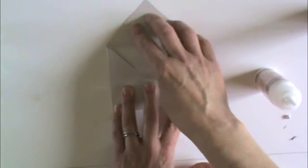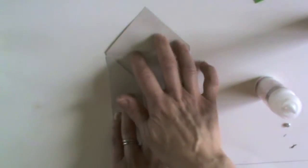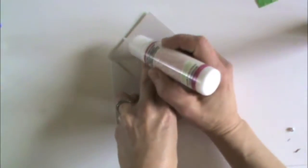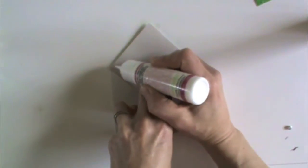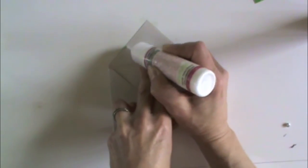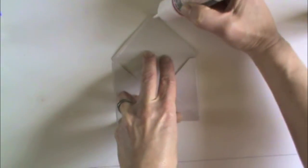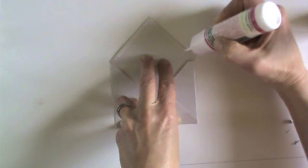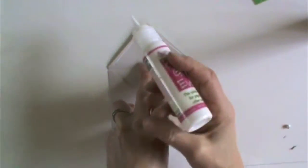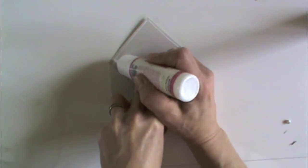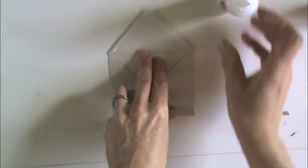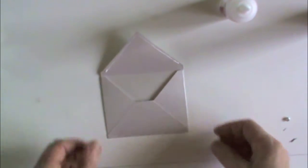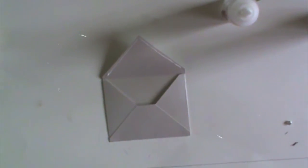And while I'm waiting for this to stick—this is a shiny pearly paper—I'm going to put some glue along this edge and this edge. And these I'm going to let dry before I stick it down. And then that's going to be repositionable, whereas the glue under these flaps are permanent. So let's set that aside to dry.